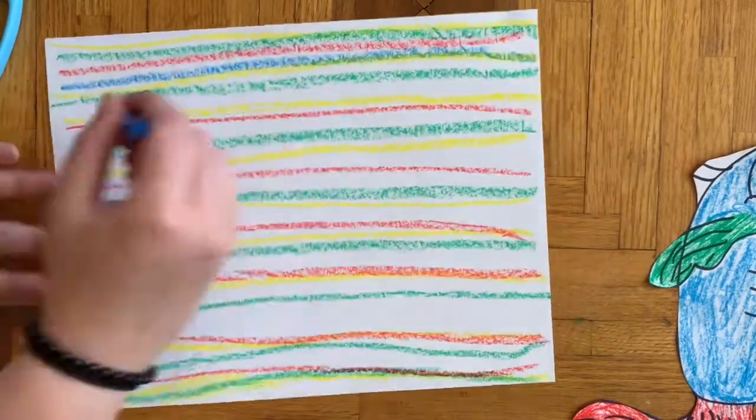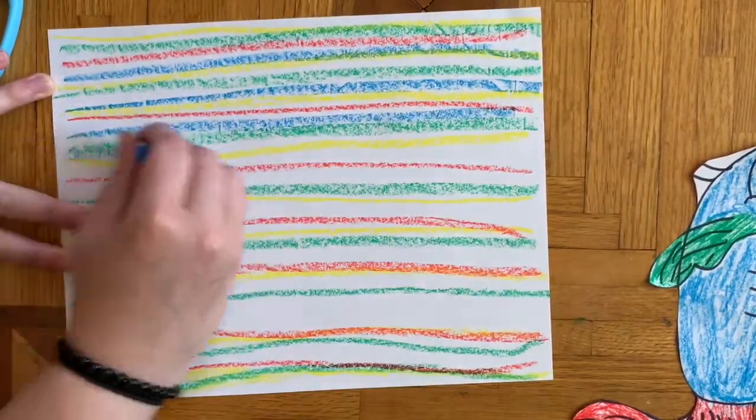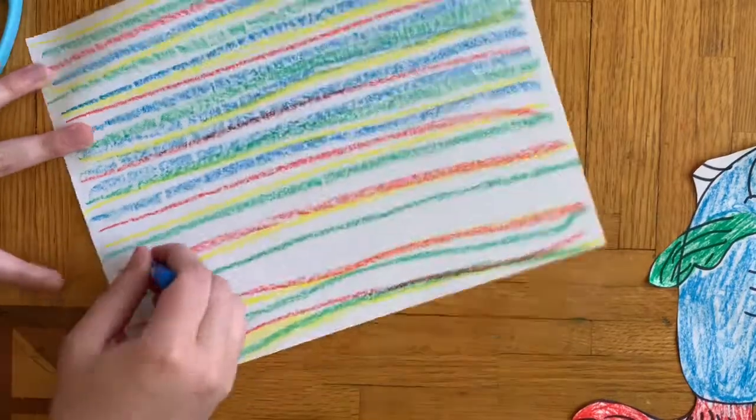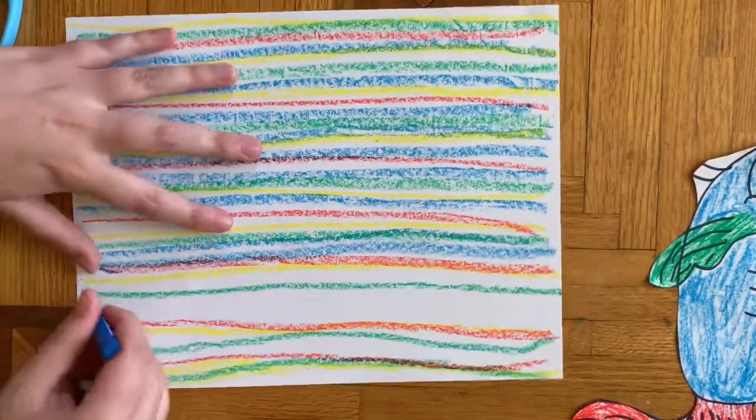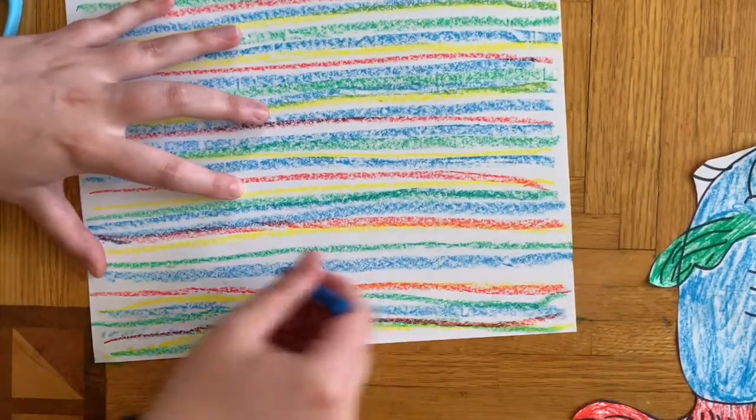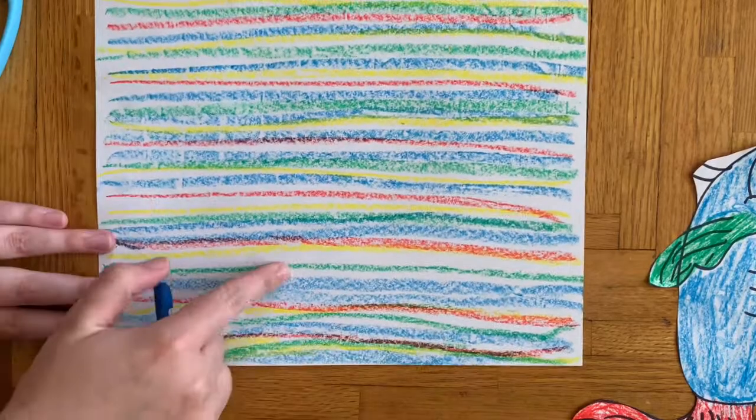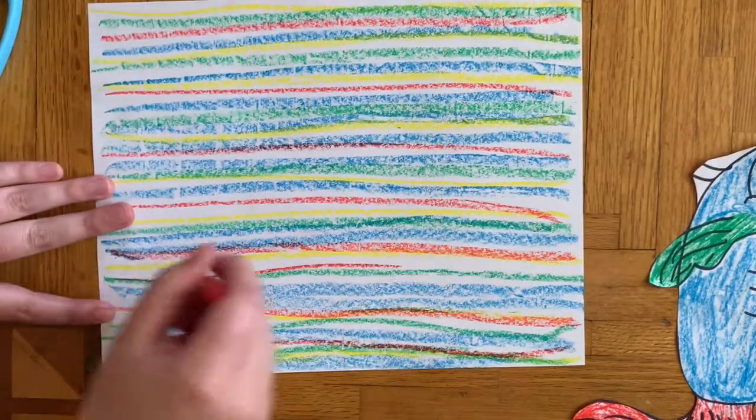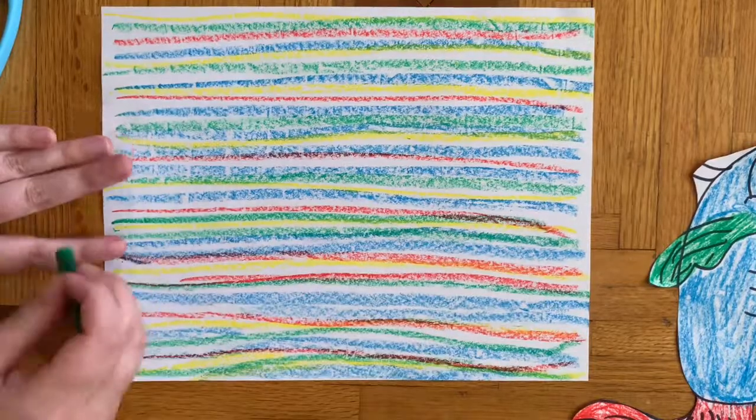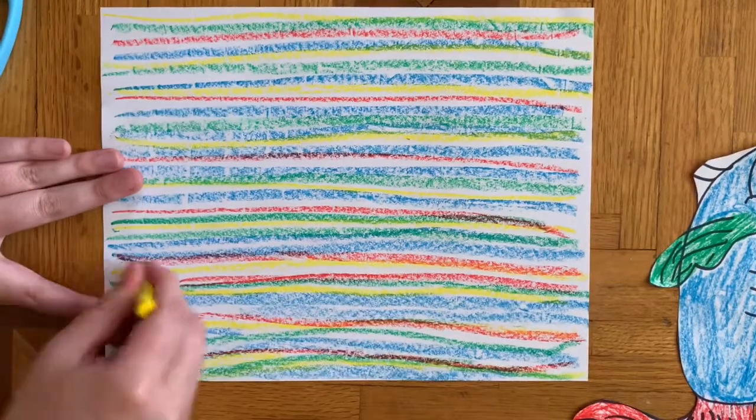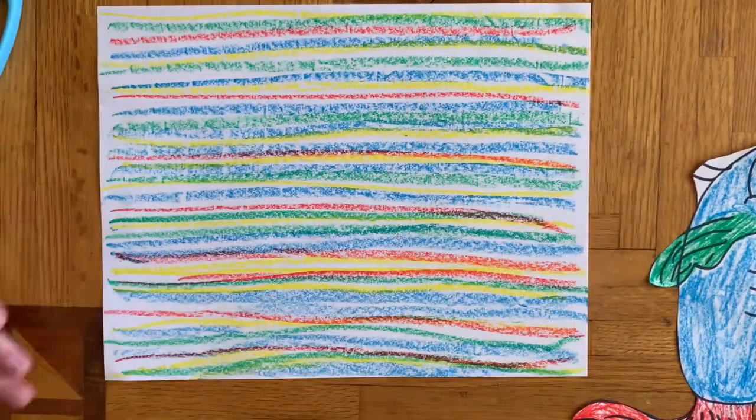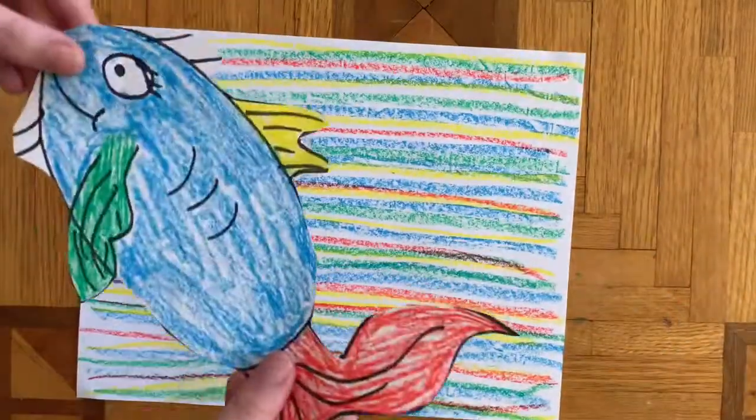Then the last color. After you finish your stripes with that last color, you're going to take a look and see if there are any white spots, and then you can start over with your colors and fill in some of those white spots. I wanted my background to be really filled in and not have a lot of white, so I made sure to do that.